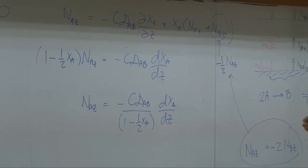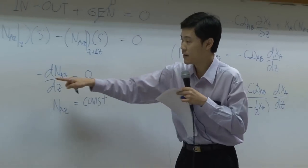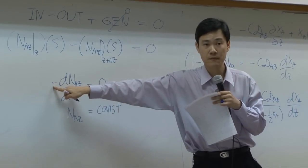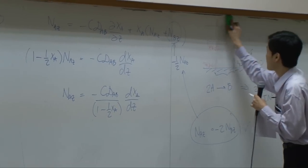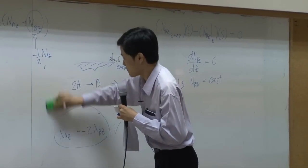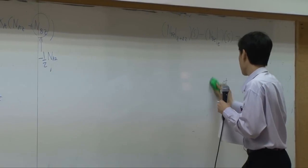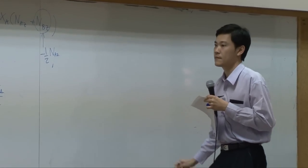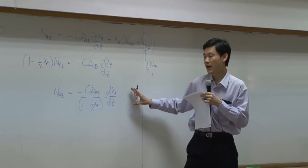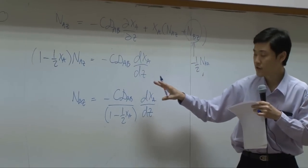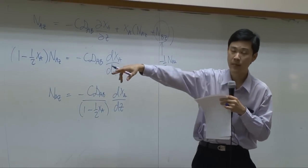Again, I intentionally leave minus sign here. Because this one and that one, we cancel out. Alright? So after derive flux of A as a function of X_A, then you can replace this relationship back to shell balance.